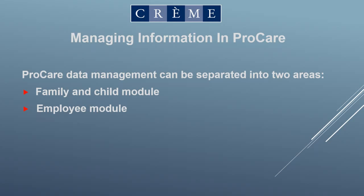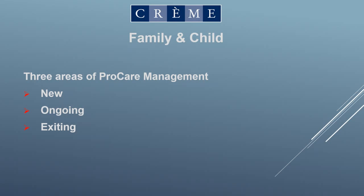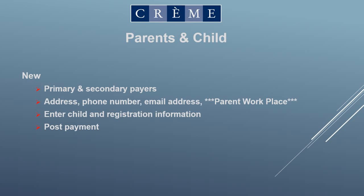In ProCare, you can break it down into two basic modules that we use: the family module, which tracks all the information for the family and child, and the employee module. For the family module, we're going to break it into three categories — when the family first registers and they're new, the ongoing use while the family is enrolled in CREM, and then when they exit CREM. There are big responsibilities throughout each phase. This system is used for billing and accounts receivable, enrollment, checking in and checking out of students and employees, emergency contact information, immunizations, and front door security — a really broad scope of activities.